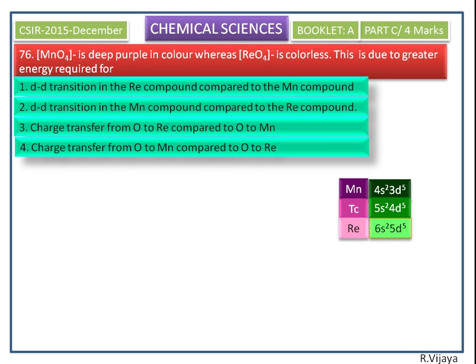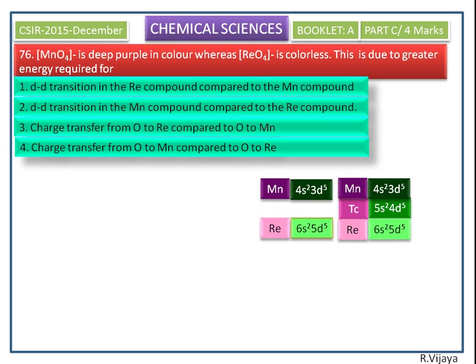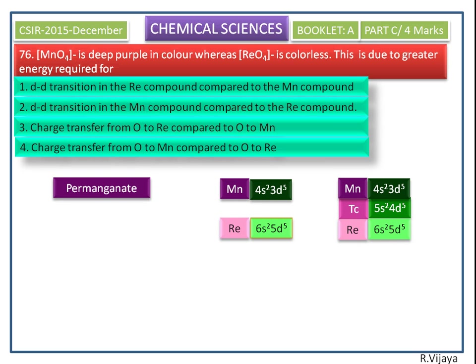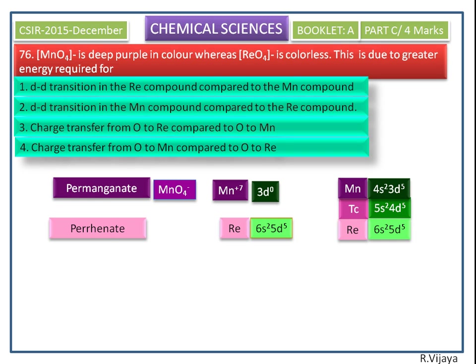Now we see the valence electrons of these elements. To discuss this problem, we consider only manganese and rhenium. In permanganate, manganese exists in the +7 oxidation state, so the valence electrons will be 3d⁰. In perrhenate, rhenium also has a +7 oxidation state, and now we see the valence electrons of rhenium in the +7 oxidation state.